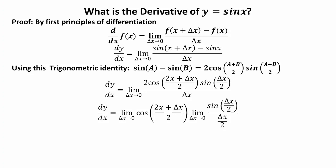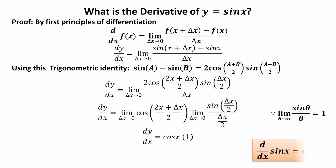Applying the limit: Δx → 0 gives cos[(2x + 0)/2] = cos(x). The next term, limit as Δx→0 of sin(Δx/2) over (Δx/2), is equal to 1. So dy/dx = cos(x). The derivative of sin(x) is equal to cos(x).